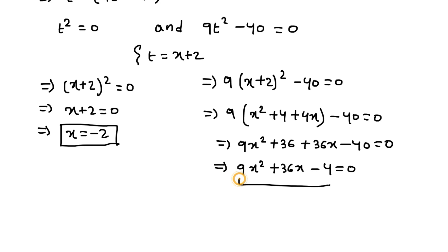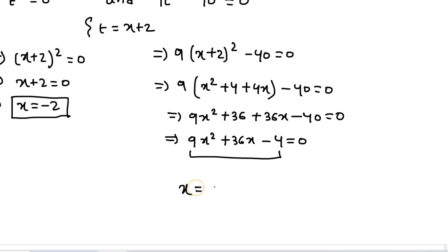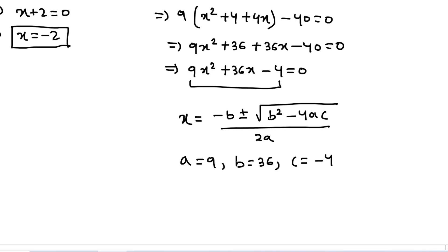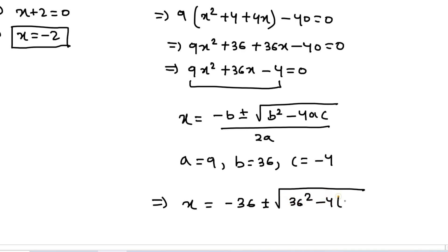We have a quadratic equation, so we apply the quadratic formula: x = (-b ± √(b²-4ac)) / 2a. Here a=9, b=36, and c=-4 are the coefficients. Substituting: x = (-36 ± √(36²- 4×9×(-4))) / (2×9).